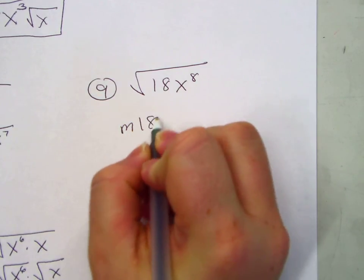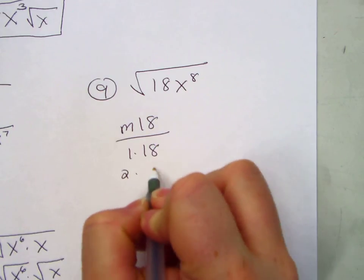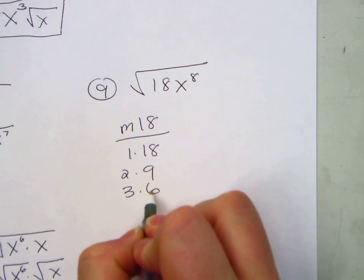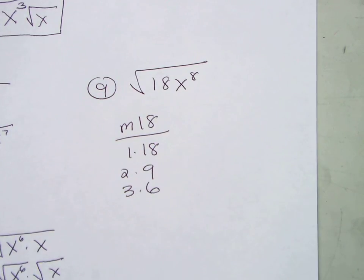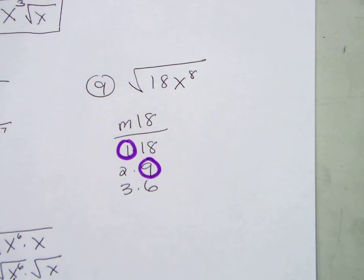We're multiplying to 18. 1 times 18, 2 times 9, 3 times 6. 9 and 1. So I'm going to use the 2 and 9 because it's bigger.